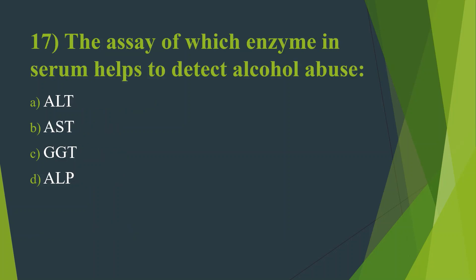Seventeenth question: The assay of which enzyme in serum helps to detect alcohol abuse? Option A, ALT. Option B, AST. Option C, GGT. Option D, ALP. Answer is Option C, GGT — that is, Gamma Glutamyl Transferase.